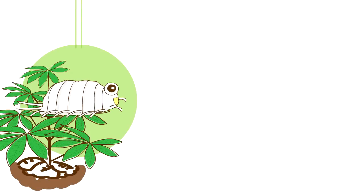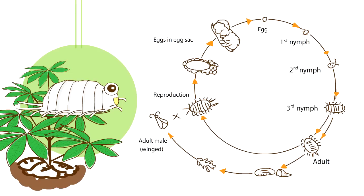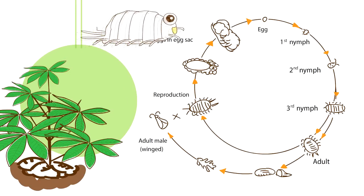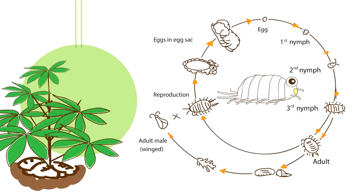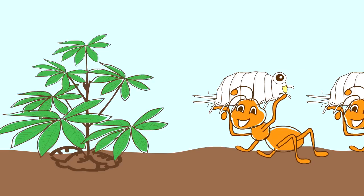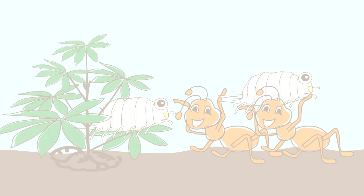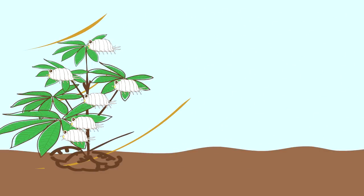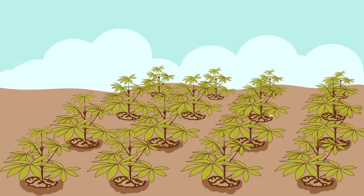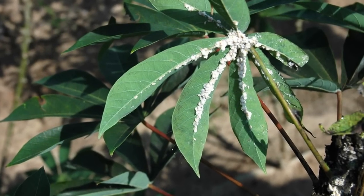Mealybug is an important insect pest of cassava in Thailand. Adult mealybugs can lay 100 to 500 eggs in egg sacks, which develop into the first nymphal stage within eight days. The nymphs molt three times, giving the insect a life cycle of 21 days. Mealybugs are transferred from plant to plant by ants or wind, dwell under the leaves, and suck plant sap. They spread in dry and warm conditions and are able to damage cassava fields in a short period of time.